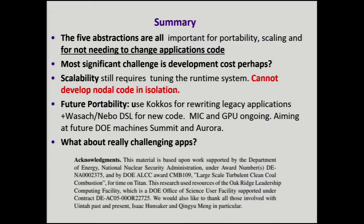To summarize: I've shown five abstractions that are all important for portability, scaling, and not needing to change the application code. The most significant challenge is the development cost in the runtime system — we still have to tune it. What we found is that you can't develop nodal code in isolation. For future portability, we want to use COCOS for rewriting legacy apps, a DSL for generating new code, and we're aiming at future machines like Summit and Aurora. The last point is that there are even more challenging applications from multi-scale modeling where we really have to combine fine-scale with continuum-scale things to get meaningful simulation results. Thank you.